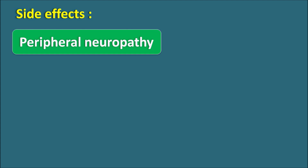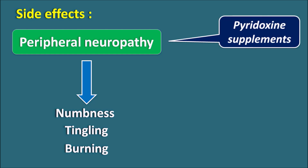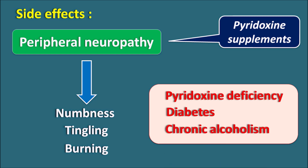Isoniazid mainly produces two important side effects. The first is peripheral neuropathy — the drug can produce numbness, tingling, and burning sensation in both hands and feet. These side effects are increased in patients who have a deficiency of vitamin B6 (pyridoxine). To control this peripheral neuropathy, pyridoxine supplements can be given. Conditions like malnutrition, diabetes, or chronic alcoholism can further increase the peripheral neuropathy produced by isoniazid.